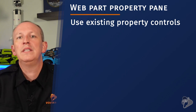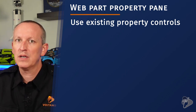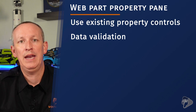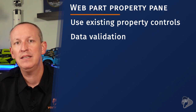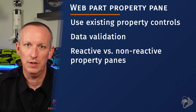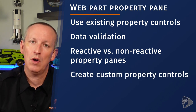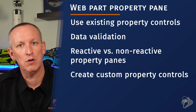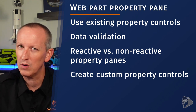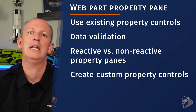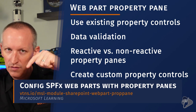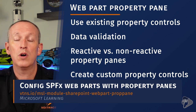The getPropertyPaneConfiguration property enables developers to define the property pane to create a custom experience for end users. You should be familiar with how to create custom property panes using existing property controls like text boxes, toggle controls, drop-down lists, and many others. You should also be familiar with how to implement data validation, the difference between reactive and non-reactive property panes, how to switch between these two modes and why you would want to, and what's involved in creating a custom property control. If you're not familiar with this process, refer to the Microsoft Learning module in the lesson notes — there's a hands-on lab exercise that walks you through it.